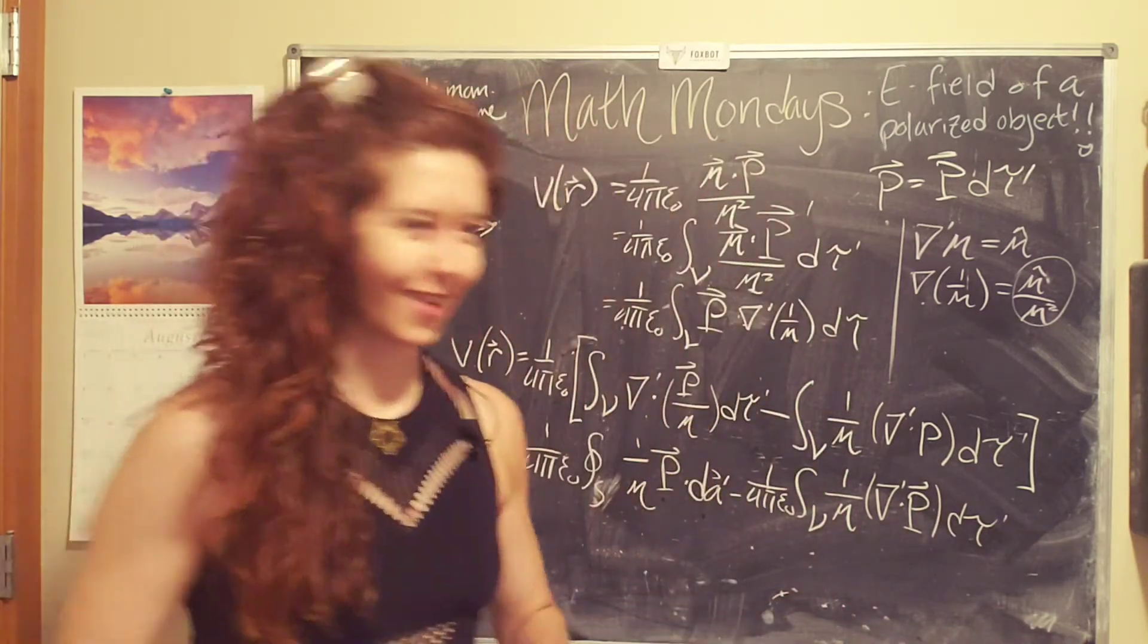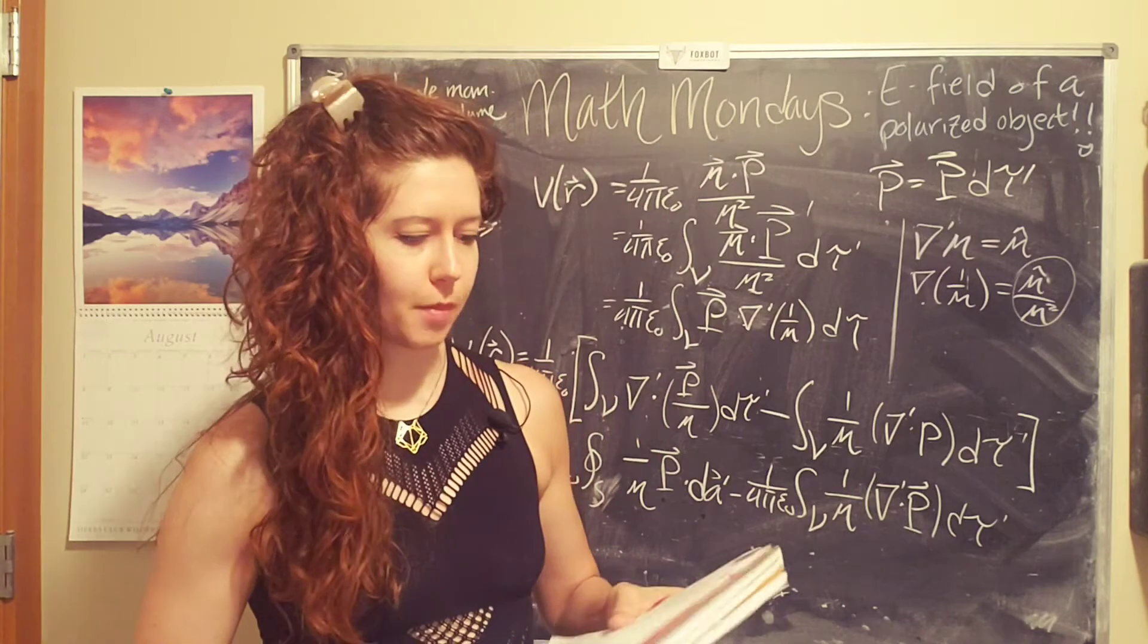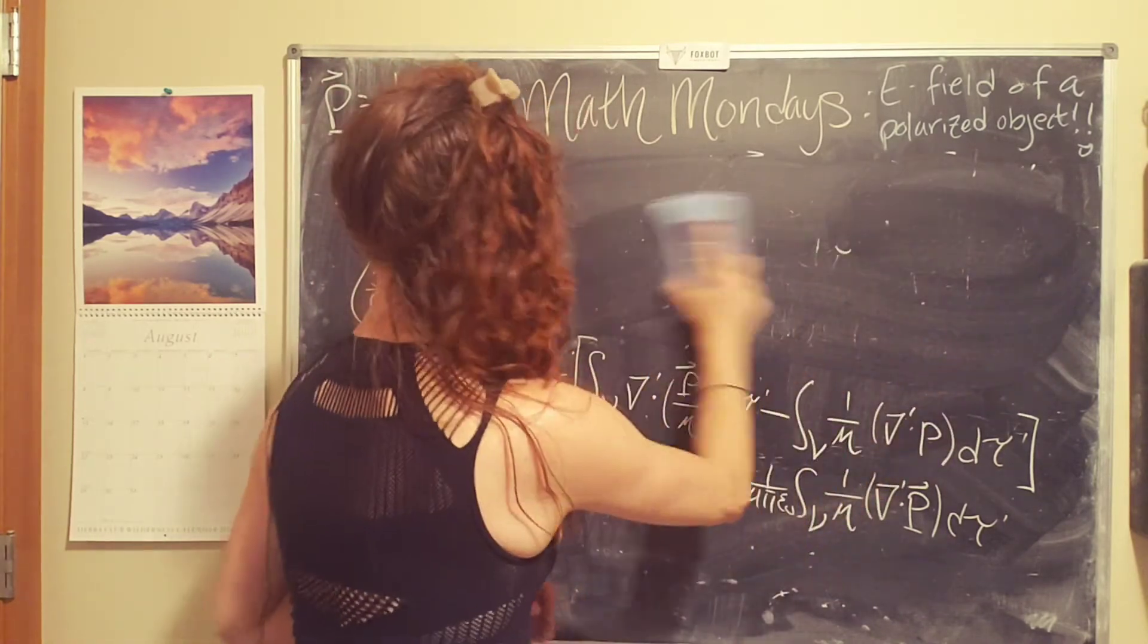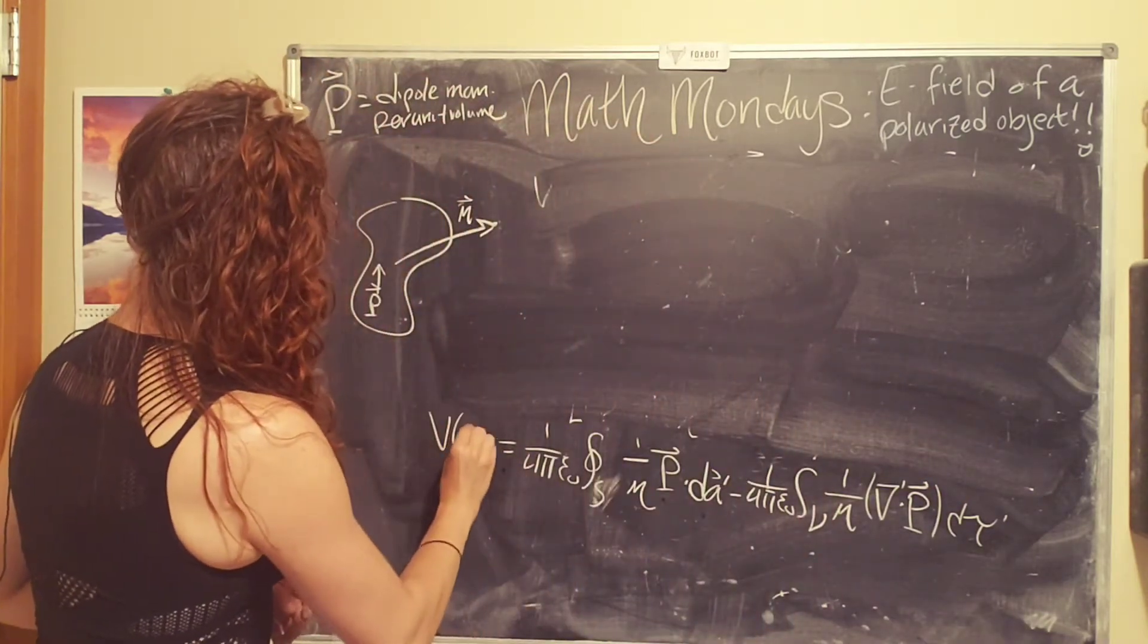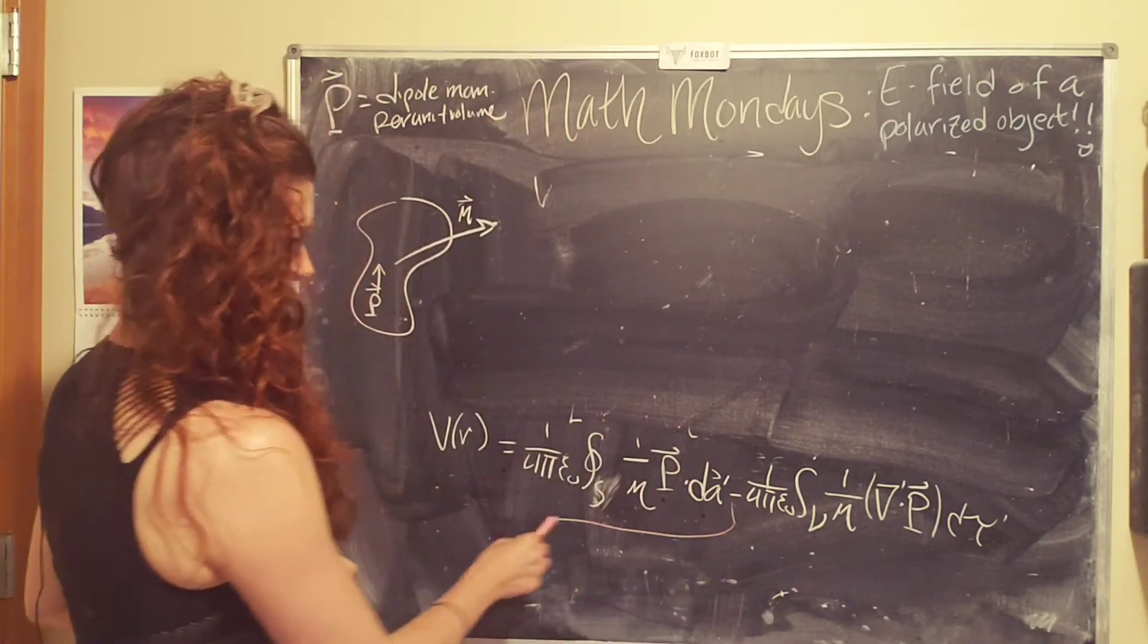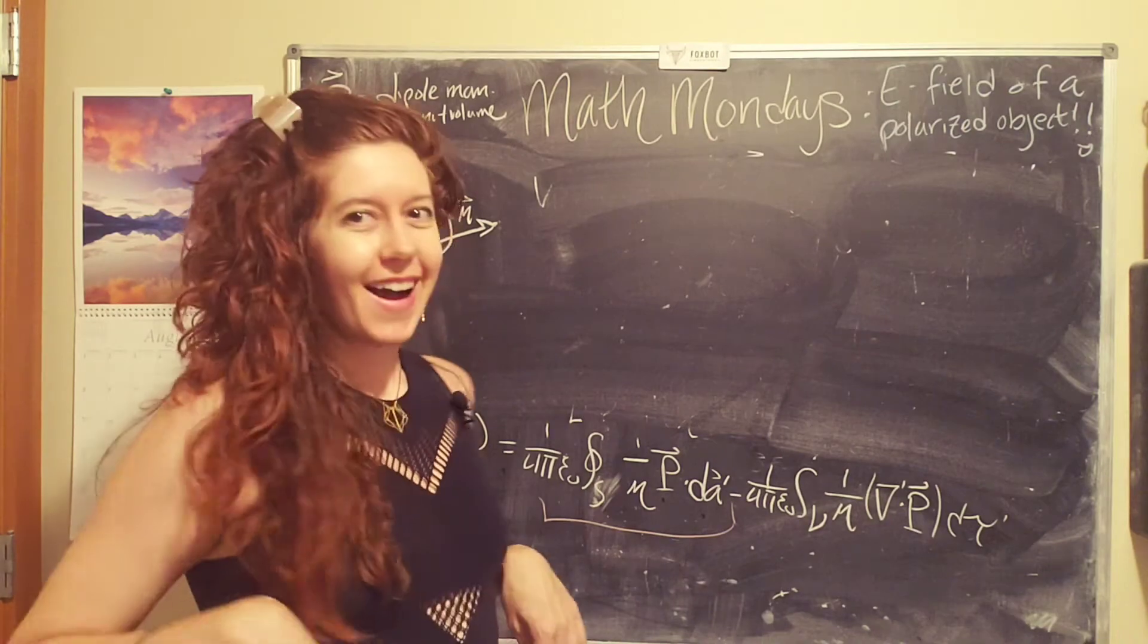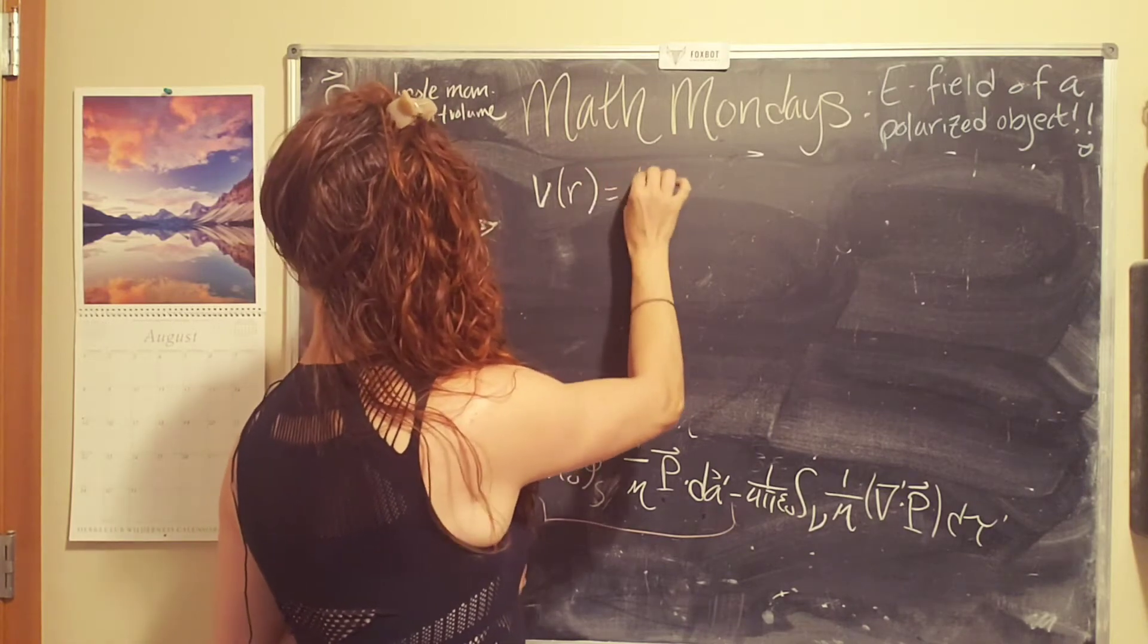But now you might start to notice something looks familiar. So let's make some space. I can erase our cool math trick. We don't need this equation anymore, but we do need this one. So I'm going to use some colors. So this term right here really looks like the potential of a surface charge.